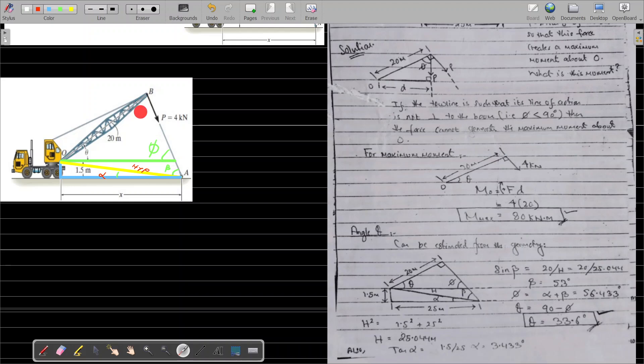Once we have phi, we know the angle between the boom and the toe line force is 90 degrees, and phi is 56.433 degrees. Theta can easily be calculated as 90 minus phi, so theta equals 33.6 degrees.